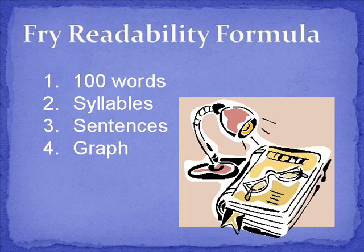To conduct a Frey Readability, randomly select 100 words in three different areas of the text you are assessing. I generally choose something at the beginning, another selection in the middle, and another at the end. When you are counting out 100 words, do not count proper nouns, initializations, and numerals.